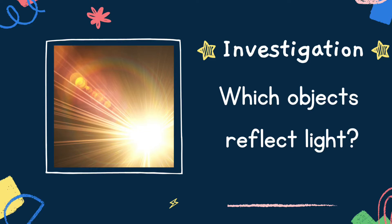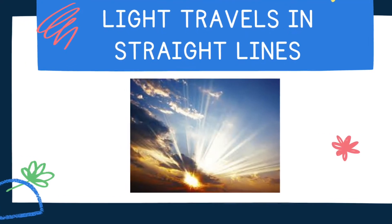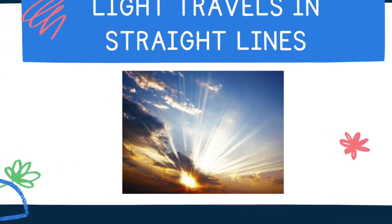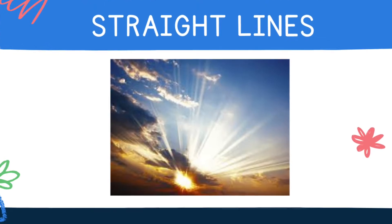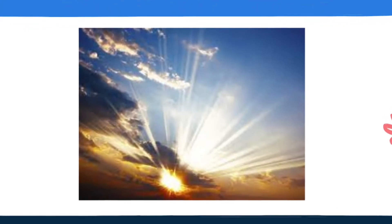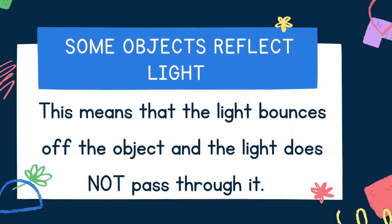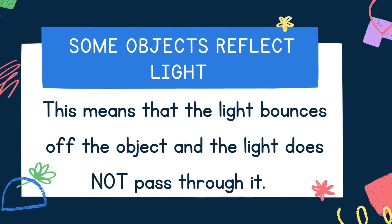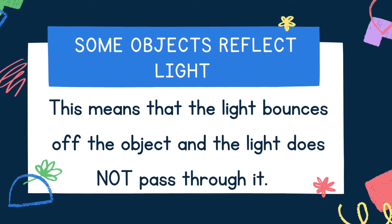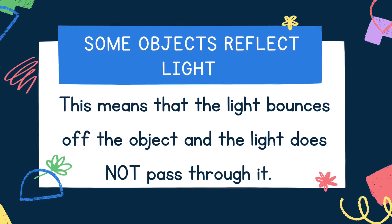Today we're going to conduct an investigation to see which objects reflect light. To do this investigation, we need to understand that light travels in straight lines. Have a look at this picture — the Sun is a light source, and you can see the Sun's rays streaming through the clouds in a straight line. Light travels in straight lines until something stops it, which means the light bounces off the object and does not go through it.